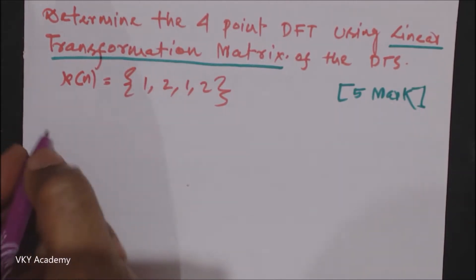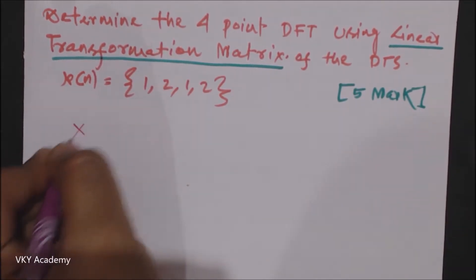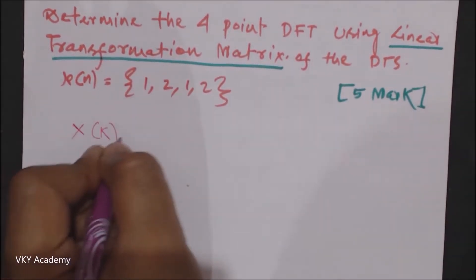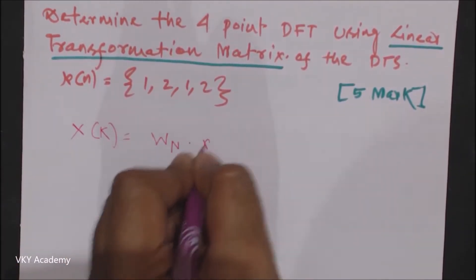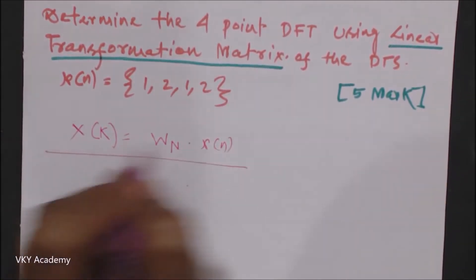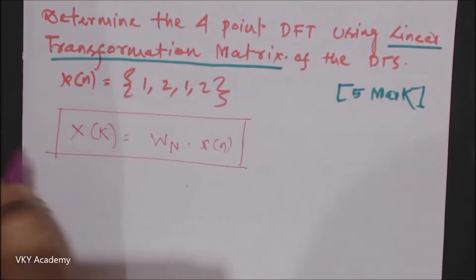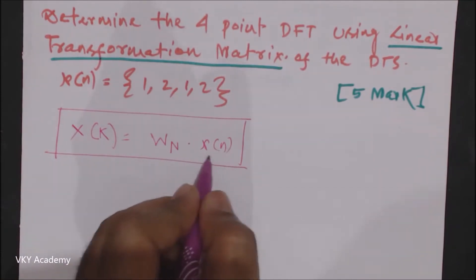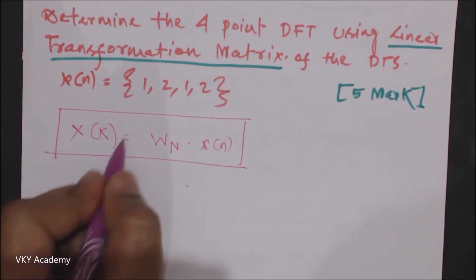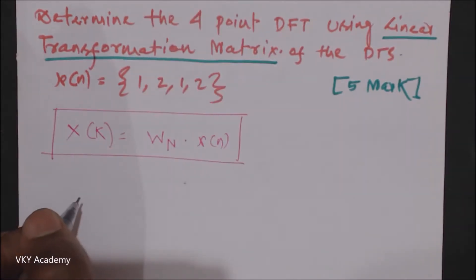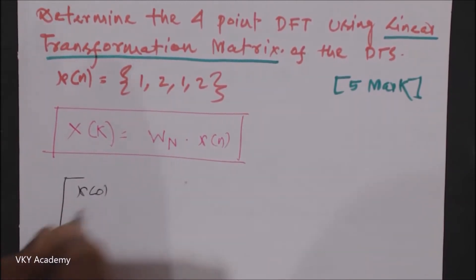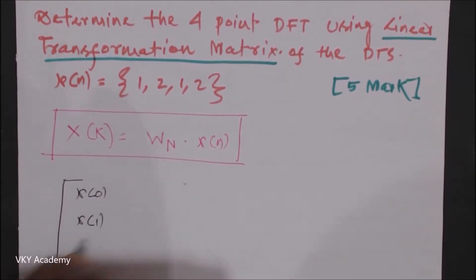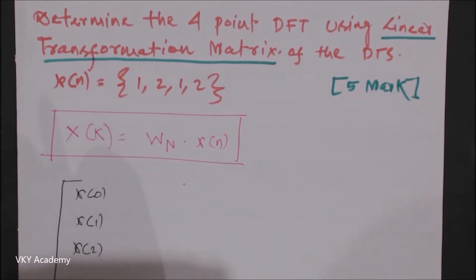As we discussed in the previous class, X(k) is always equal to W_N multiplied by x(n). Whenever the W matrix is multiplied with the input matrix, it generally produces X(k). We have seen the 4-point input matrix x(0), x(1), x(2), x(3).